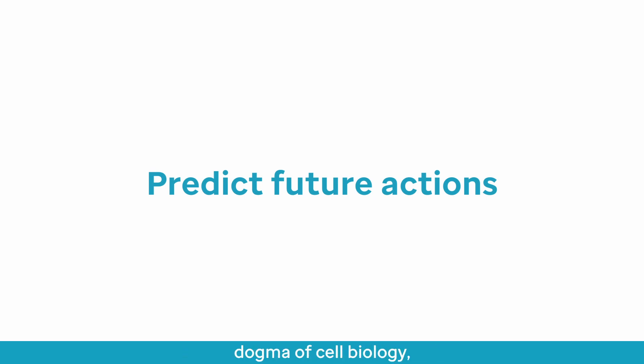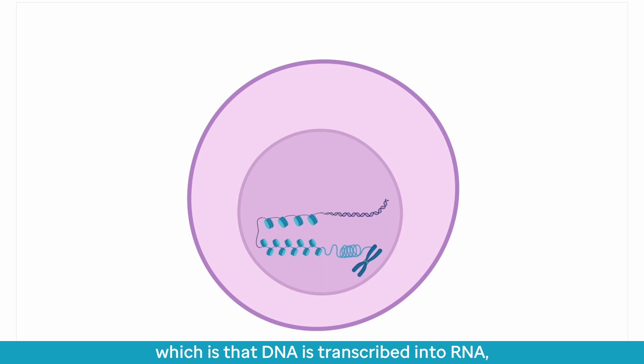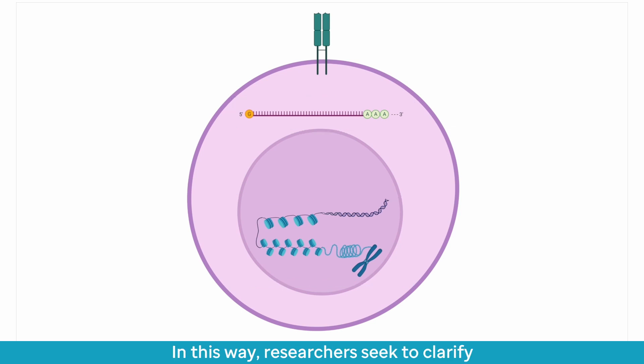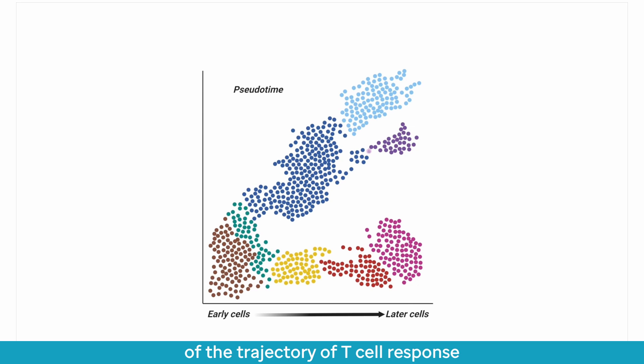Scientists went back to the central dogma of cell biology, which is that DNA is transcribed into RNA, which is then translated into protein. Since the technology is hindered at the protein level, scientists are now looking at the RNA and DNA levels. In this way, researchers seek to clarify the finer details of the trajectory of T cell response and incorporate the aspect of time into their analysis.